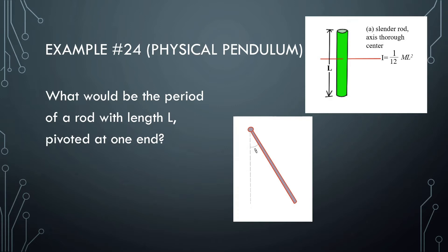Example number 24: What would be the period of a rod with length L pivoted at one end? So this rod has a length L. What we know is that at the center of mass, it has an inertia of (1/12)mL². That's given to us. However, we'll see that it's not pivoting along the center — it's pivoting along the end. So we have to figure out what the inertia is at that pivot point.